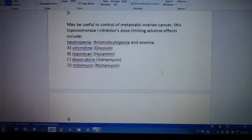Okay, which may be useful in control of metastatic ovarian cancer? This topoisomerase 1 inhibitor's dose-limiting adverse effects include neutropenia, thrombocytopenia, and anemia. So A is vincristine, B, topotecan, C, doxorubicin, and D, mitomycin. And the answer is B, topotecan.